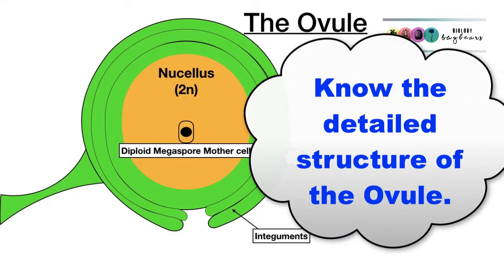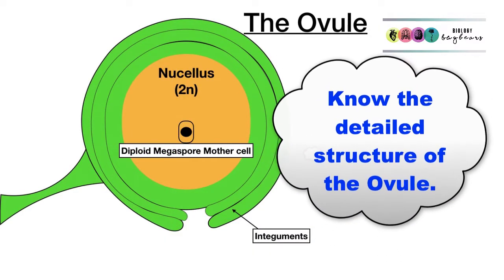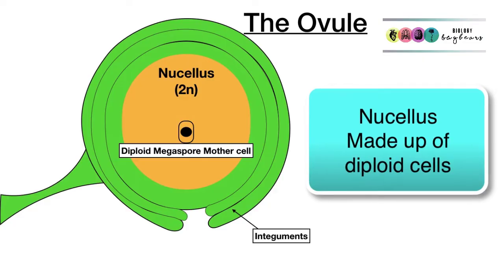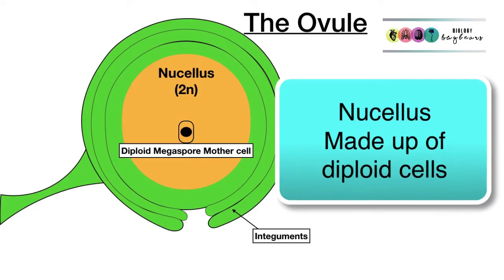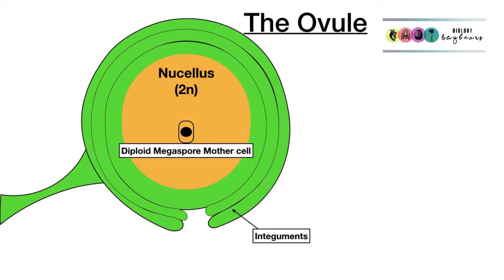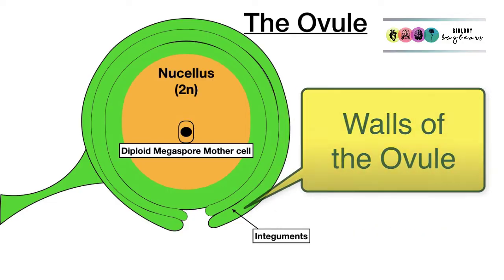It's very important to know the structure of the ovule really well, because later in seed development you will need to give an account of what happens to each of these structures and what they become. Most of the ovule is made up of a mass of diploid cells called the nucellus, which are there to provide nourishment to the developing embryo sac. The walls of the ovule are called the integuments — it's important to remember their name.